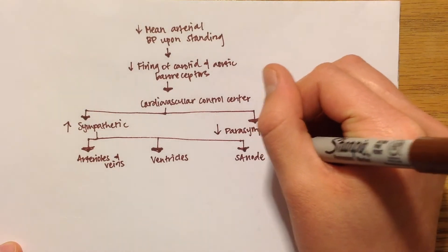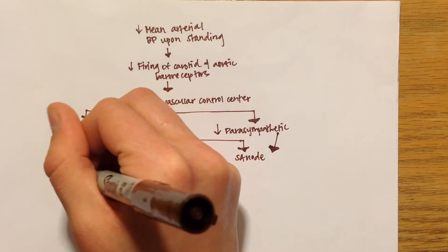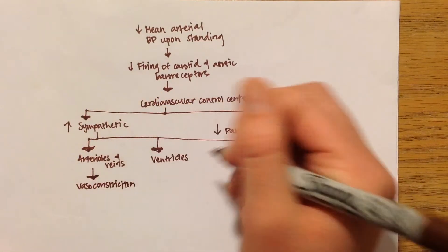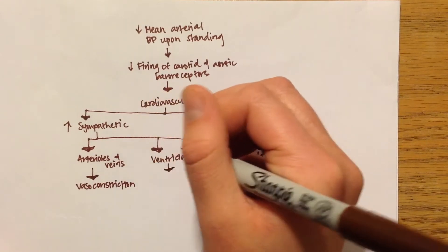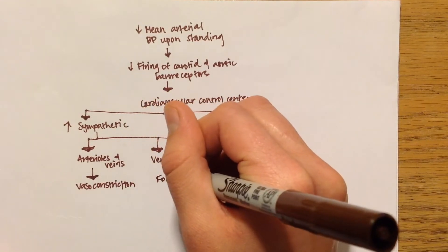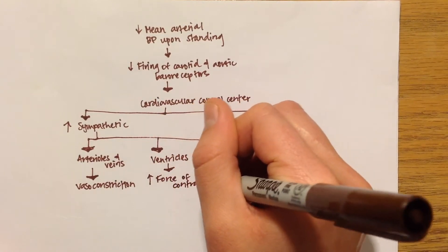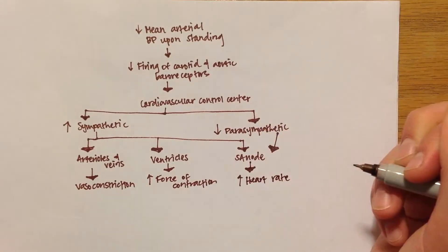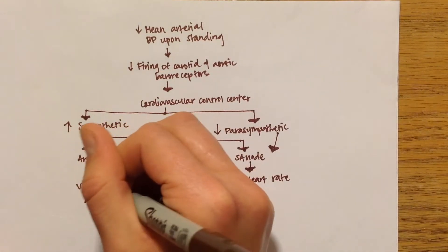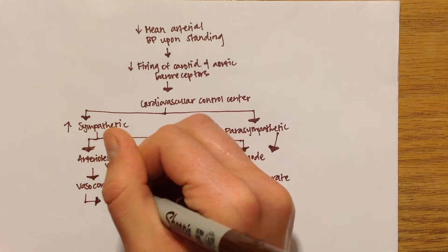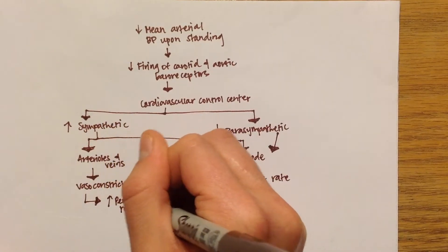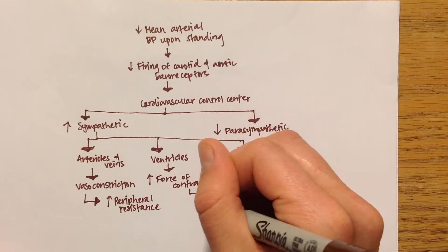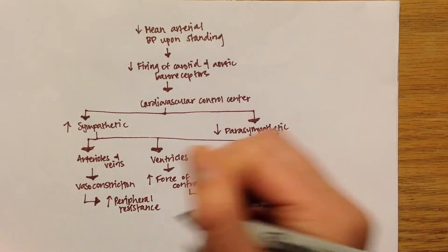But in this case, we'll just focus on the sympathetic. So this increase in the sympathetic nervous system would then cause vasoconstriction, an increased force of contraction, increased heart rate, increased peripheral resistance, and increased cardiac output. So I'll just write the last two here on the slide. And all of these results here, all of these increases, would eventually lead to an increased blood pressure.